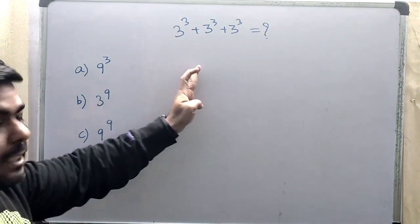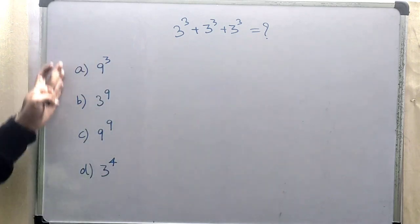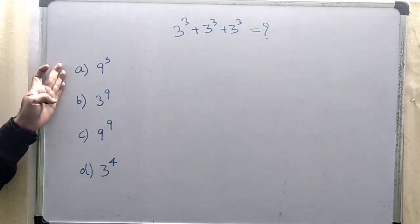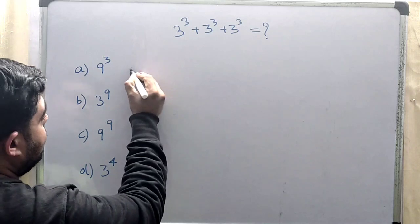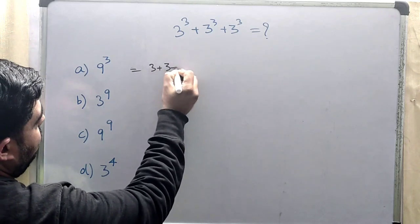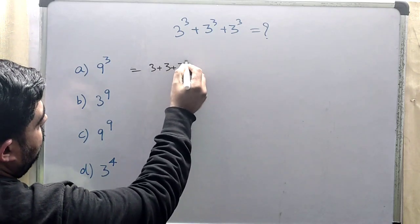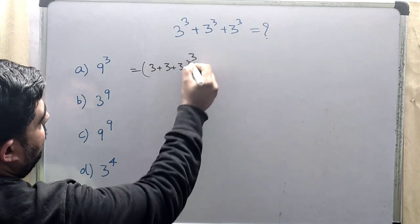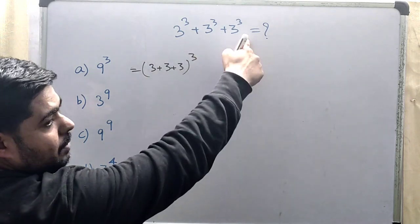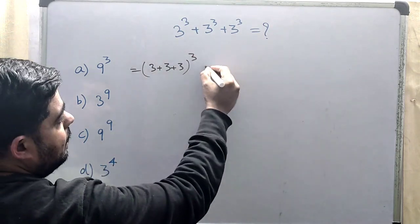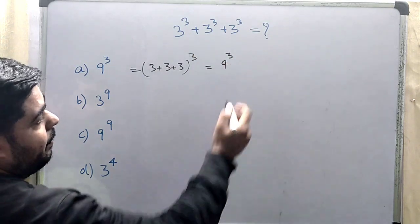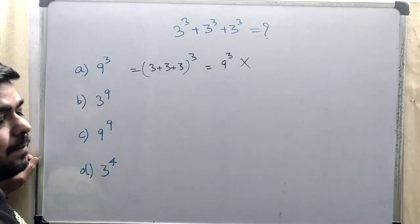We will check this by using our options. We will check from option number 1. This will be equal to 3 plus 3 plus 3 to the power 3, which means this is in the form of this. But this will come 9 to the power 3, so this is not our answer.